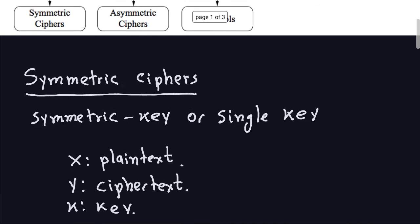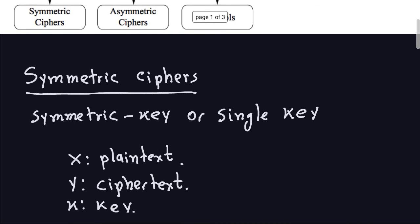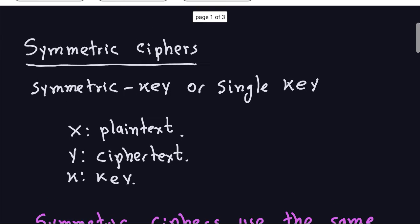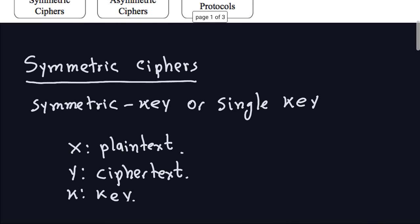Before I go into the next picture, I want to talk about some definitions. I am going to denote by X my plaintext, Y will be my ciphertext, and K will be my key — which is only one key because we are talking about symmetric ciphers.